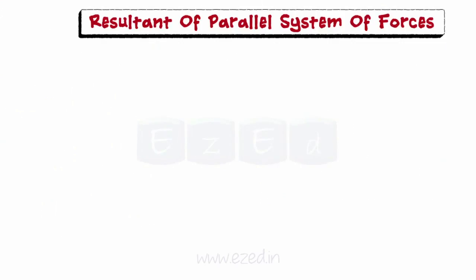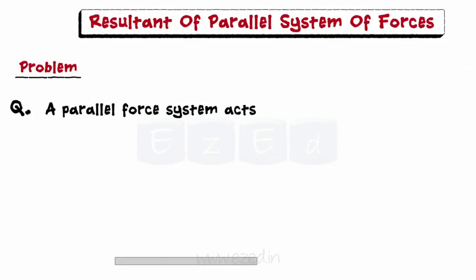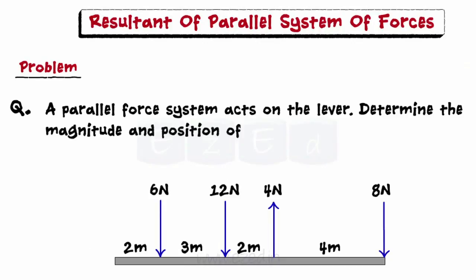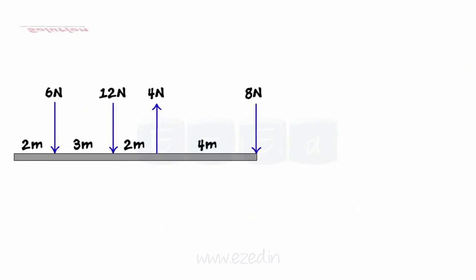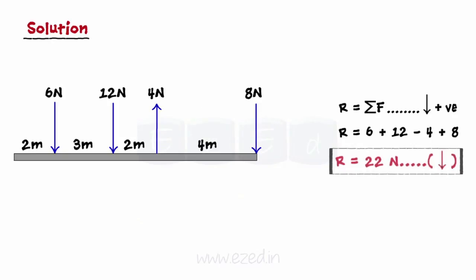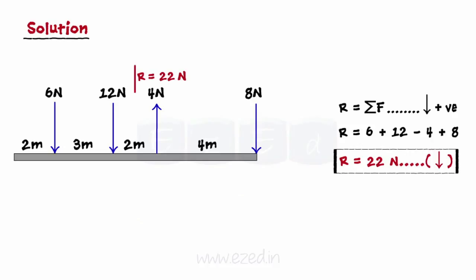Now, let's consider the following problem. A parallel force system acts on the lever. Determine the magnitude and position of the resultant. Firstly, we have to find the resultant of the entire system. This is done by simply adding up all the forces using the sign convention as downwards positive. The resultant is found to be 22 newton acting downwards.